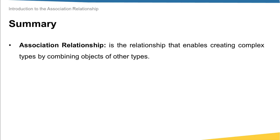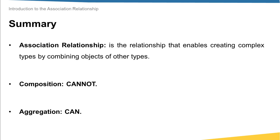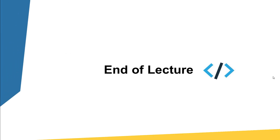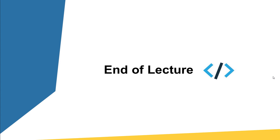Now let's recap what we have learned. In this lecture we talked about association relationship, which enables creating complex types by combining objects of other data types or classes. For this relationship we have two types: composition, where the component class cannot exist independently of the composite class, and aggregation, where the component class can exist independently of the composite class. Thank you so much for your time, and join me in the next lecture.